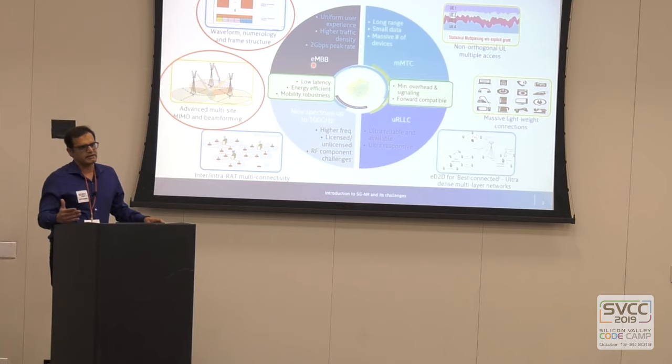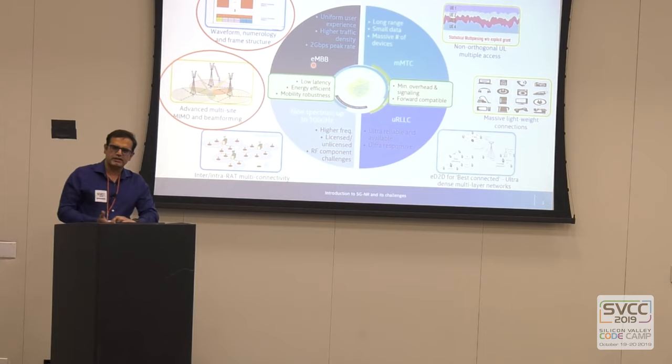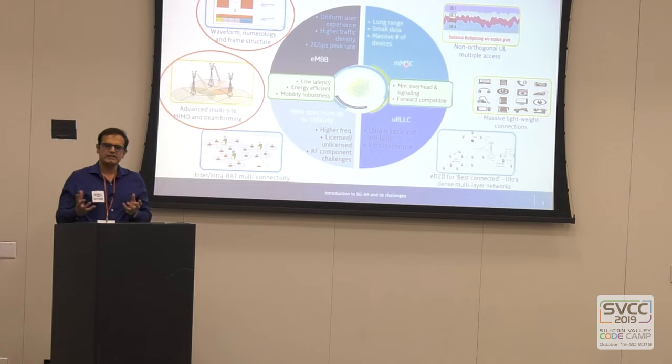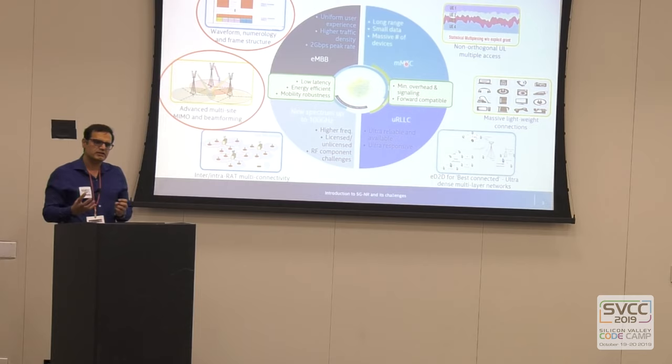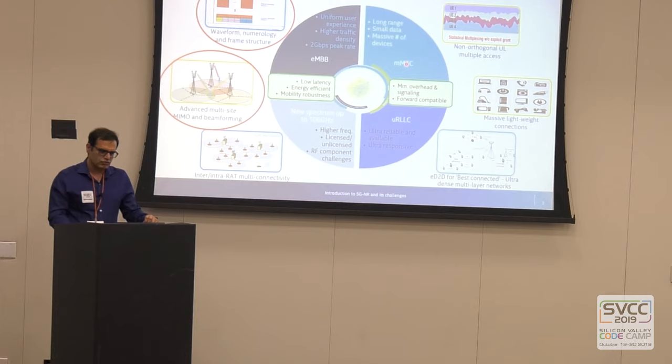Once we established those requirements, what were the use cases people were thinking of? One was eMBB — Enhanced Mobile Broadband — where we wanted higher data rates, like downloading HD videos in seconds instead of minutes. Another was MMTC — Massive Machine Type Communication — which is where the concept of IoT comes in. It's not a human being interacting; it's machines communicating with each other. Your fridge is talking with your TV, your air conditioning is talking with the thermostat — machines talking with each other instead of a human directing those communications.